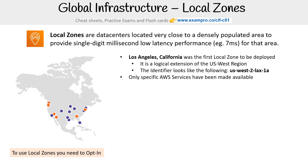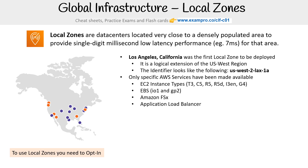Only specific AWS services have been made available in local zones — particular EC2 types, EBS, Amazon FSX, Application Load Balancer, and Amazon VPC. They've probably extended it to more services. You don't need to know all of that for the exam, but the point is there's a limited subset of things available.